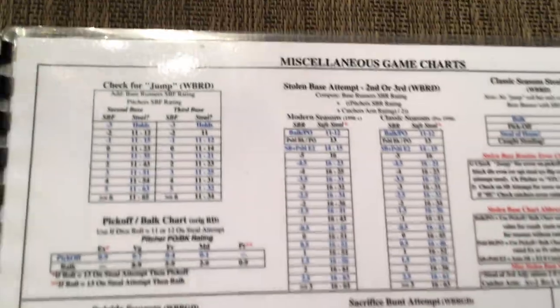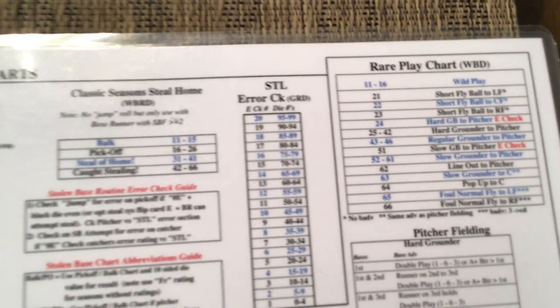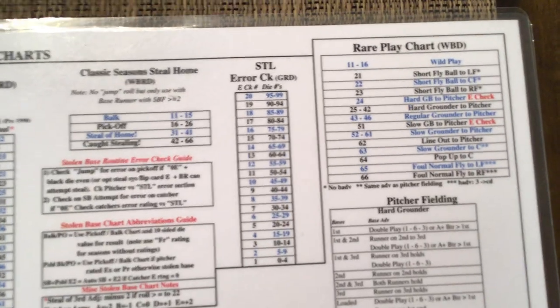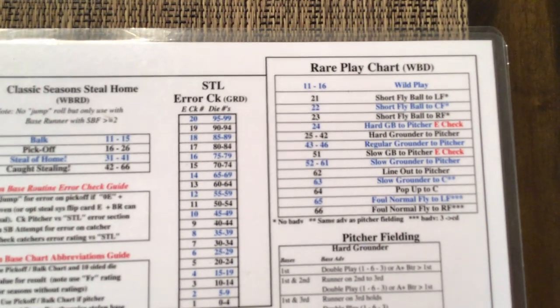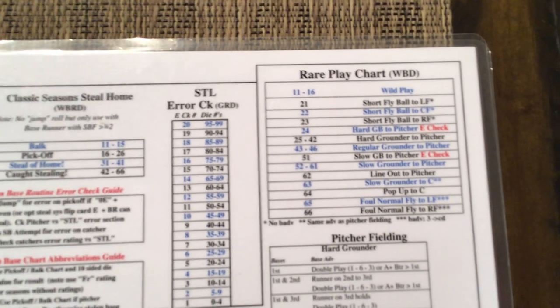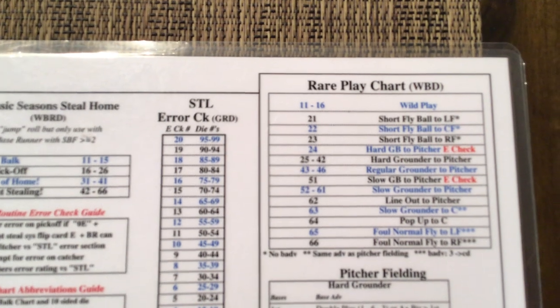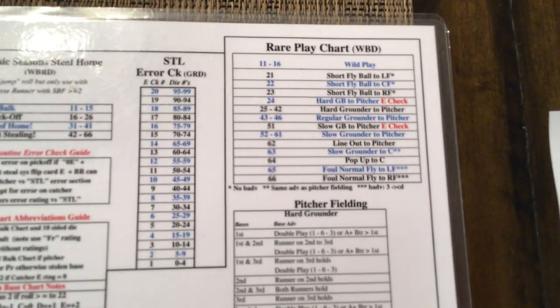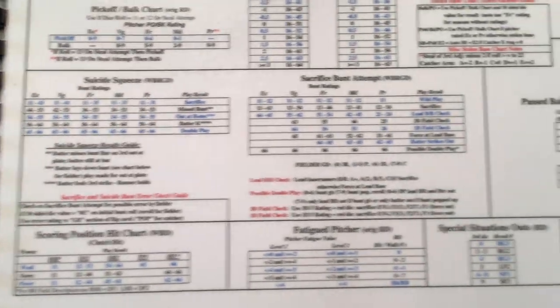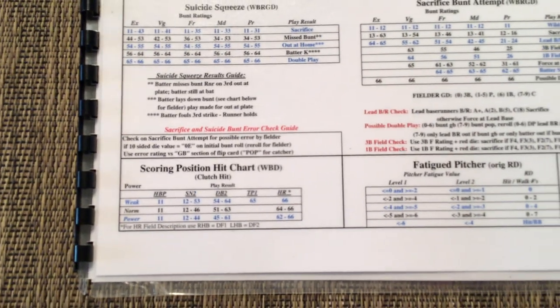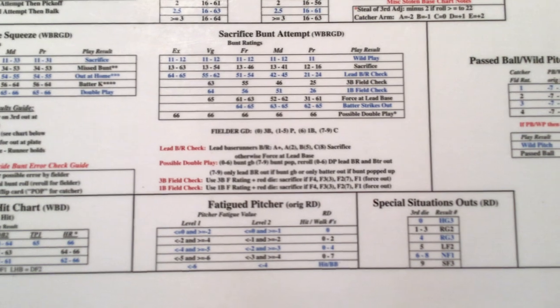Then you have miscellaneous game charts — stolen base charts, a rare play chart which can lead to a wild play. The rare play covers outs that aren't as frequent as regular balls hit to infielders or outfielders: balls hit to the pitcher, short fly balls. You have a one-in-six chance of getting a wild play, then you go to those loose wild play charts. The rest are pretty self-explanatory. You have bunt charts, a scoring position hit chart for when you have an SPH result, a fatigue pitcher chart, a special situations chart, and a passed ball wild pitch check.